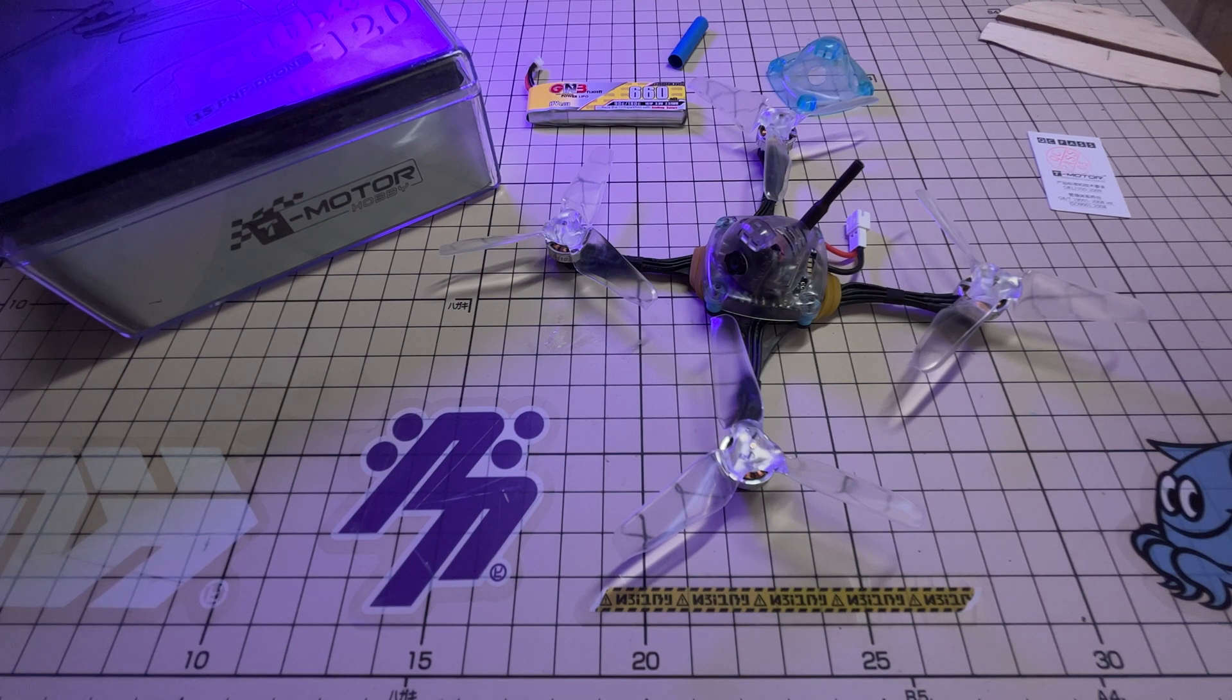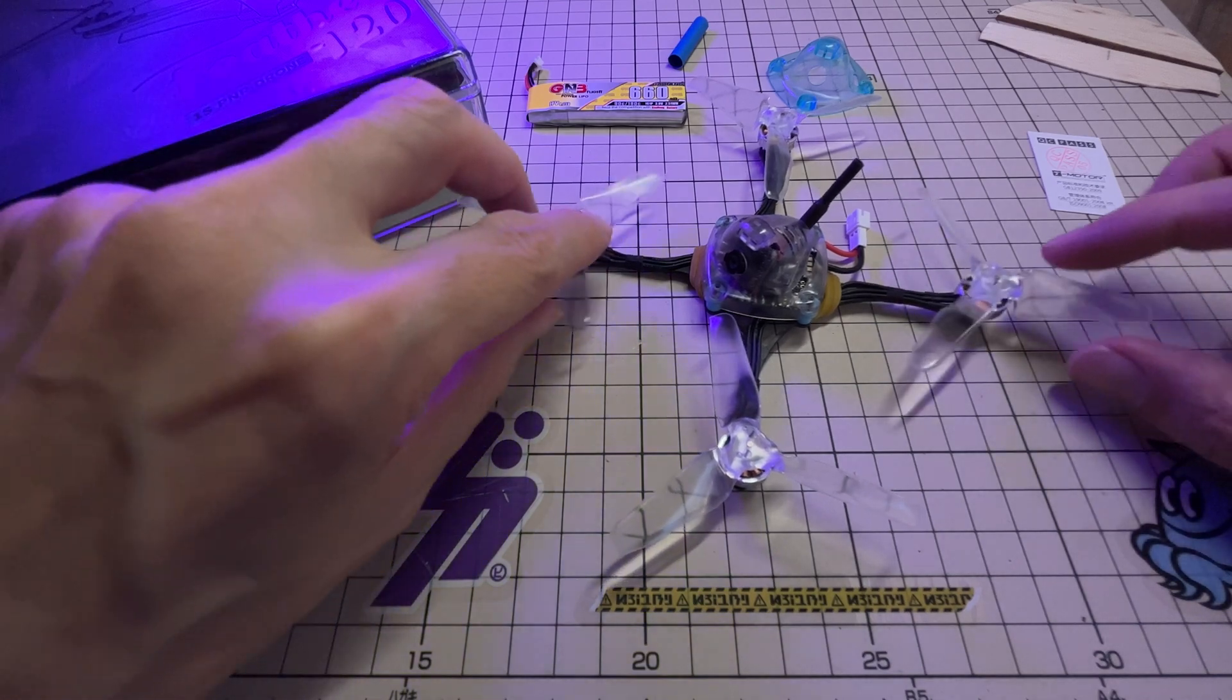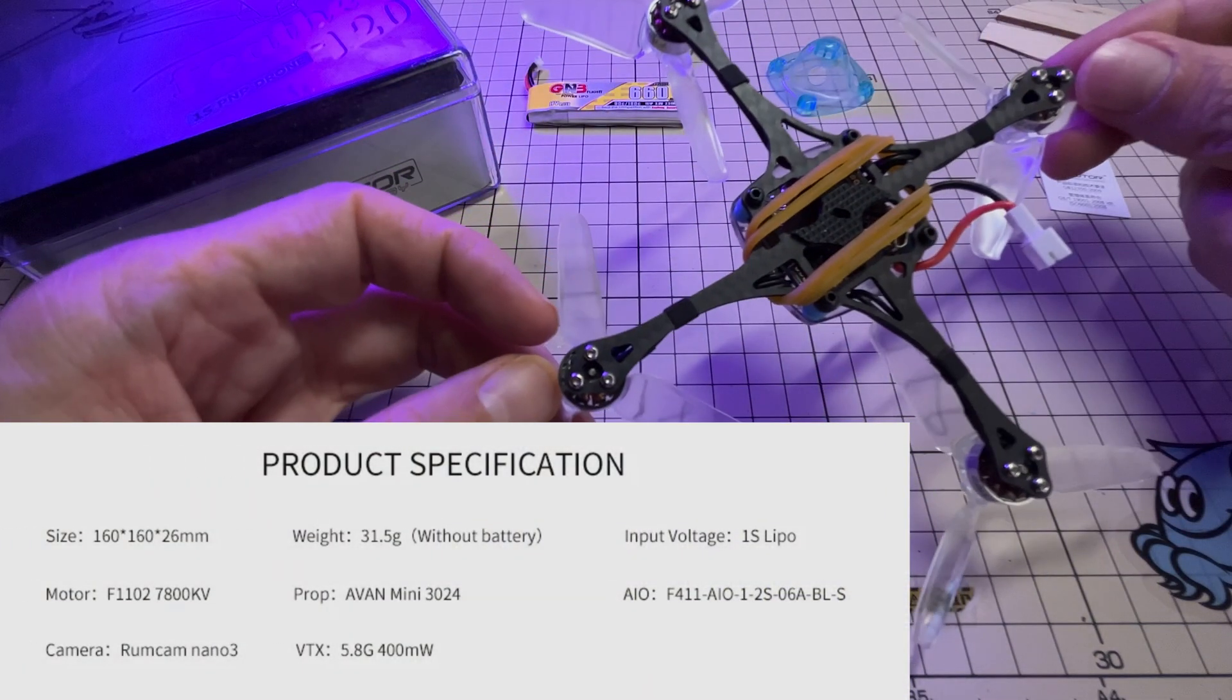Hey everyone, it's Mike here, and today I'm taking a look at the new T-Motor Feather 120. This is an ultra-lightweight 3-inch 1S quadcopter, obviously analog.